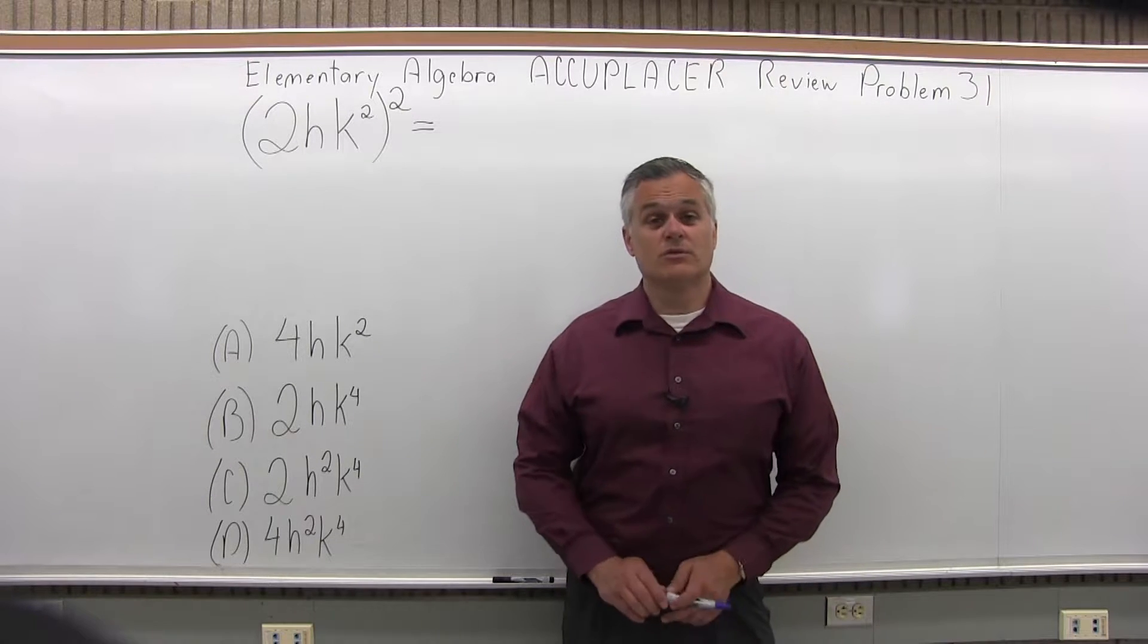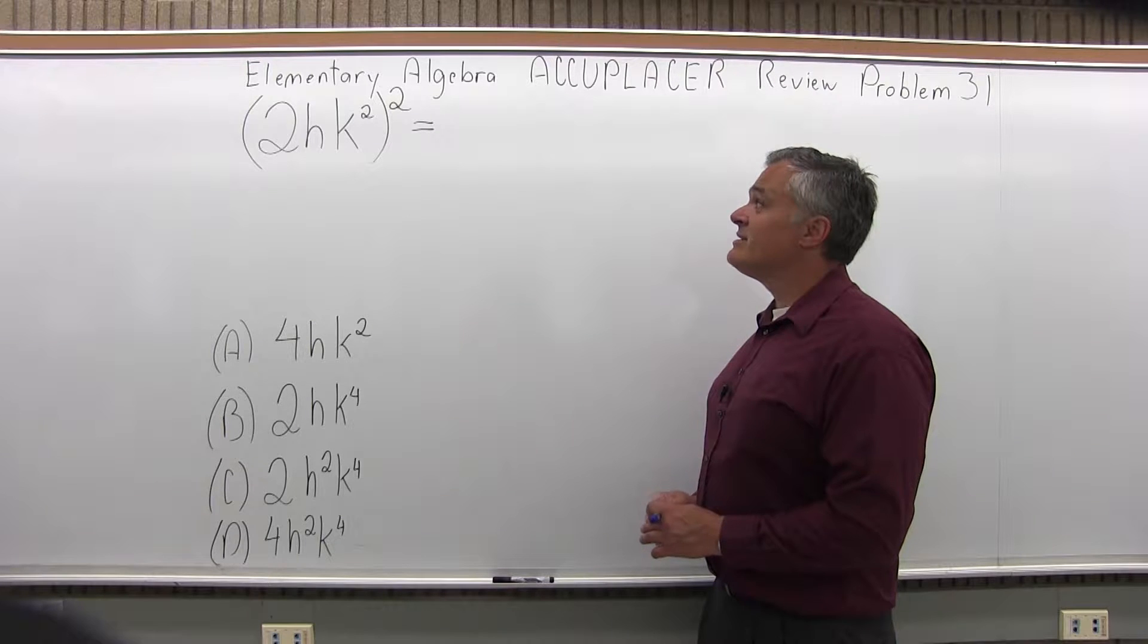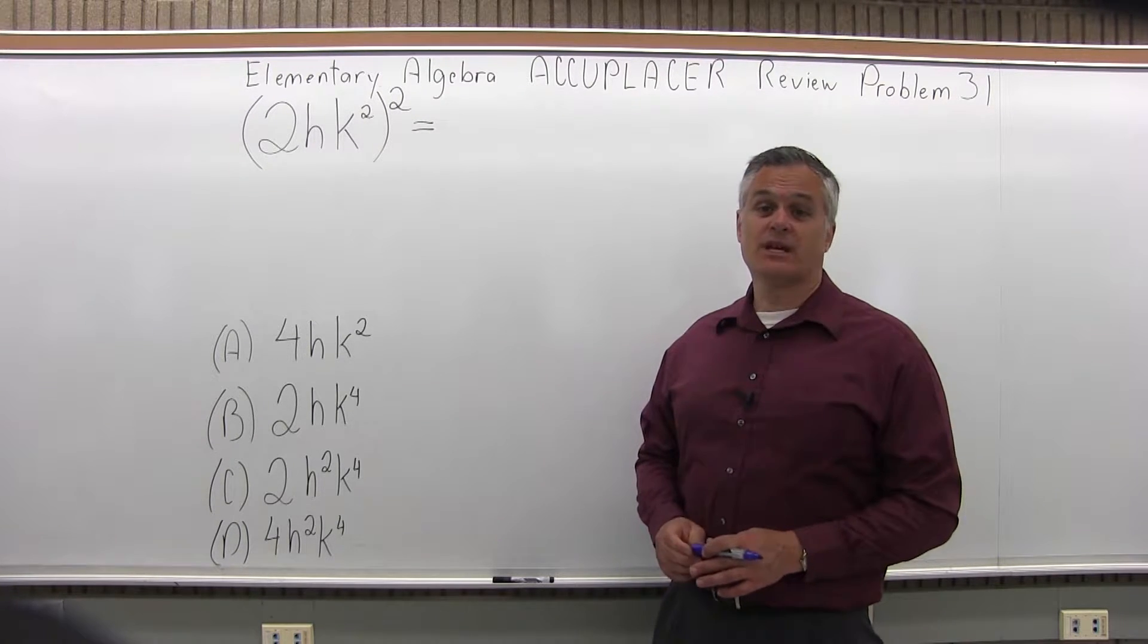This is the Elementary Algebra Accuplacer Review, Problem 31. We have 2HK to the second, all in parentheses, raised to the second power.